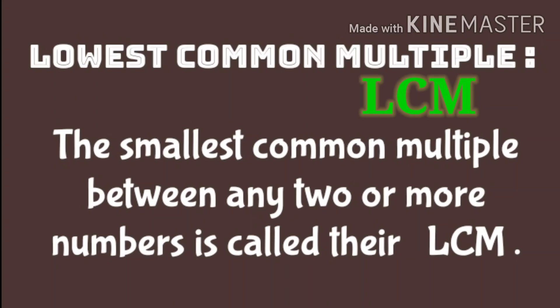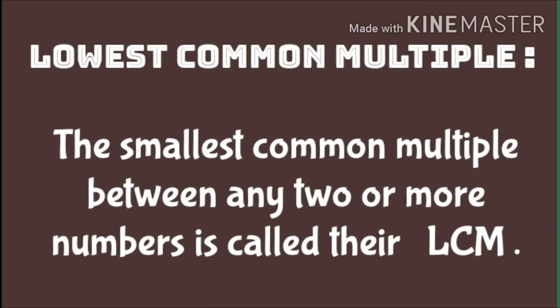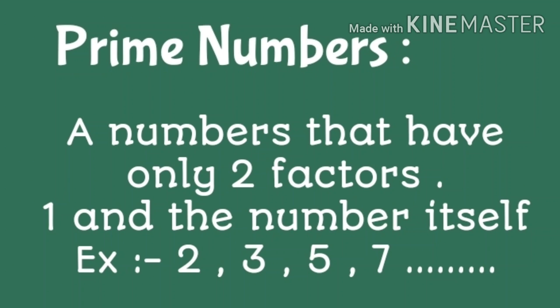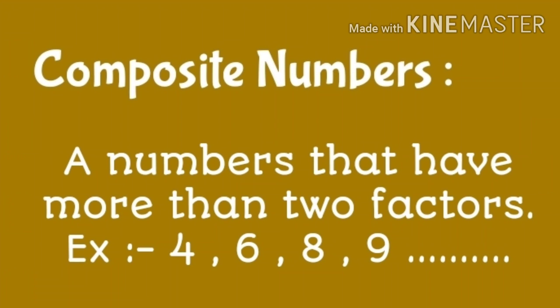हम दिये हुए numbers के multiples को find out करते हैं, फिर उनके common multiples में से सबसे smallest multiple को लिख लेते हैं। Next, prime numbers are numbers that have only two factors — one and the number itself — are called prime numbers. Example: 2, 3, 5, 7 and so on. And composite numbers are numbers that have more than two factors. Example: 4, 6, 8, 9 and so on.